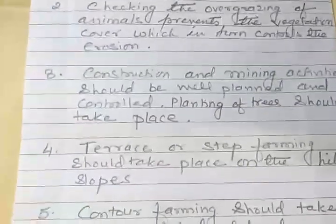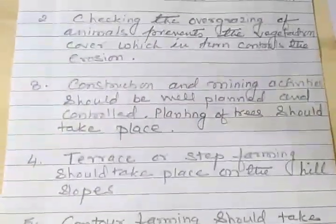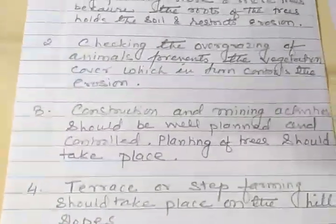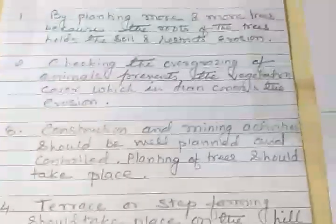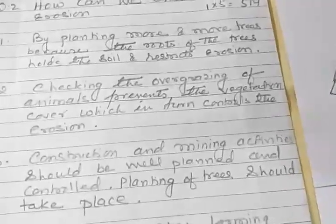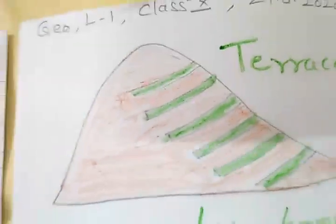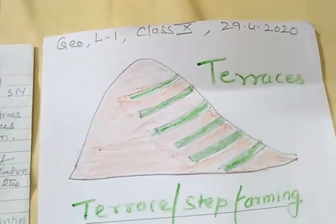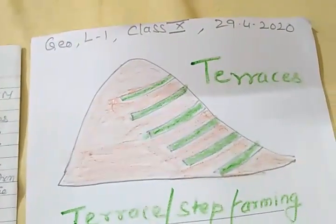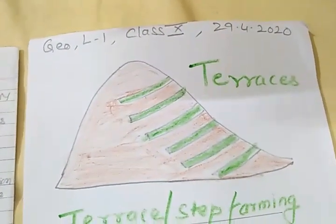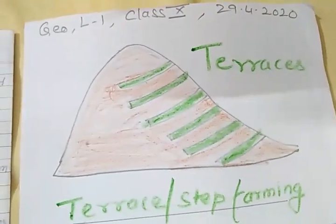The fourth point is terrace farming. Terrace farming, or step farming, should take place on hill slopes to minimize soil erosion. I will show you the diagram of terrace farming — you can draw this diagram if you want; it is your choice. This is the diagram of terrace farming, which is done on hill slopes. Farming is done on the slopes in the form of steps or terraces, which minimizes soil erosion.